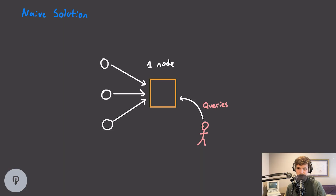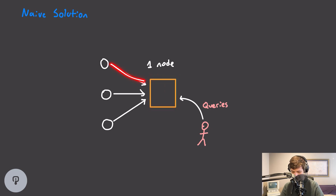Let's take a look at how we'd actually go about building this system. We're going to keep it fairly high level and cover a lot of topics. To start off, let's look at a naive solution where we only have a single server responsible for ingesting these logs. In this example we have one node storing all of our logs and handling all the input from our various services. We also have a person who might want to query those logs and can send those queries directly to that one node.